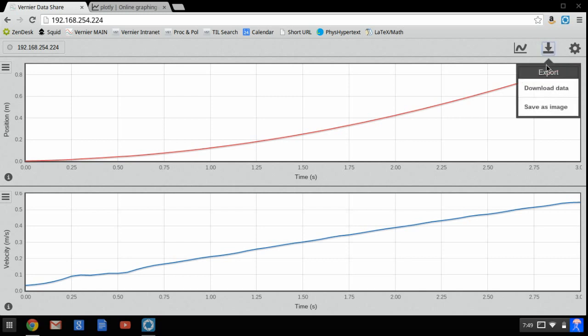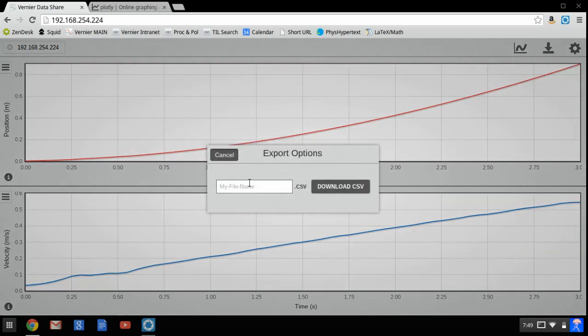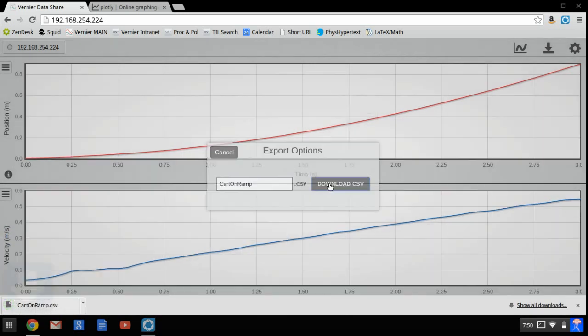First, I need to download the data, so I go to Export, choose Download Data, and I'm going to choose my title of cart on ramp, and it downloads.